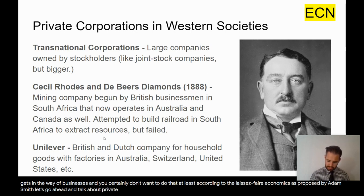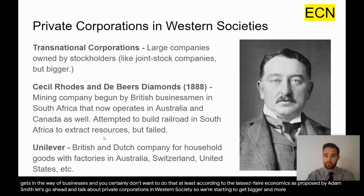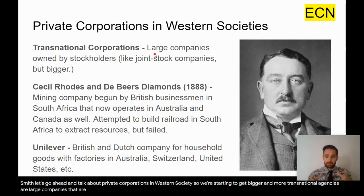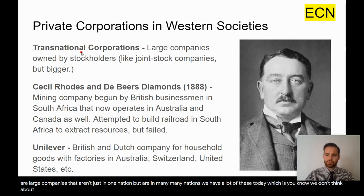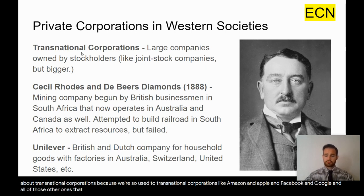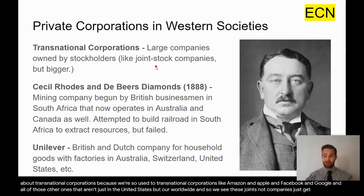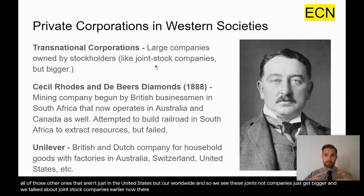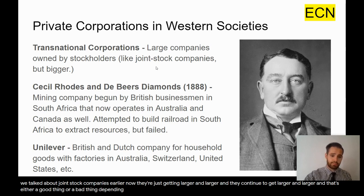Let's talk about private corporations in Western society. We're starting to see bigger, more transnational corporations — large companies that aren't just in one nation but in many nations. We don't think about transnational corporations much today because we're so used to companies like Amazon, Apple, Facebook, and Google that operate worldwide. We see joint stock companies getting bigger and larger, which is either a good or bad thing depending on your point of view.